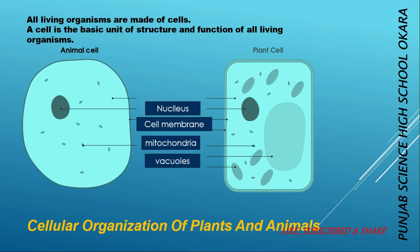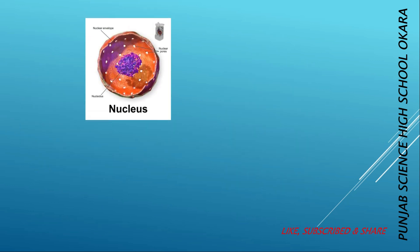The main parts of a cell include: nucleus, cell membrane, mitochondria, and vacuoles. The most important part of a cell is its nucleus. It controls all the activities of the cell. Therefore, a nucleus is the control center of the cell.